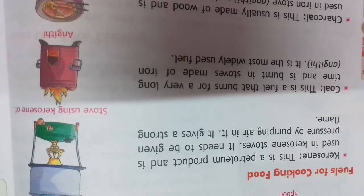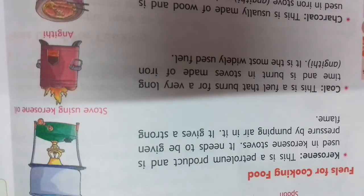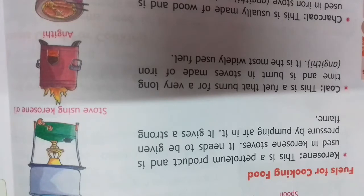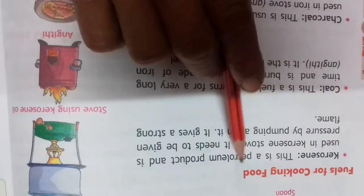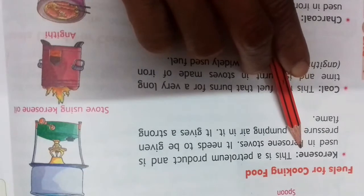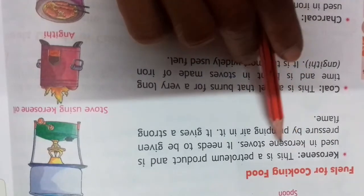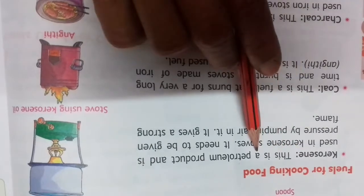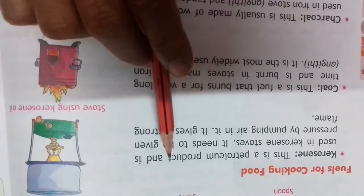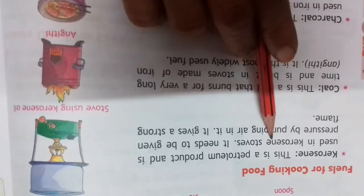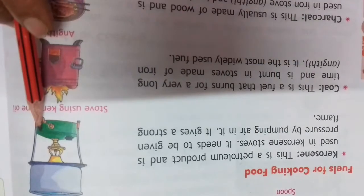Hello students, good morning and welcome to class 3 EVS. In today's class we study about the fuels which are used for cooking food. First one is kerosene. Kerosene oil, you have seen it, blue color. This is a petroleum product and is used in kerosene stove.